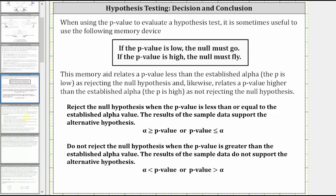When using the p-value to evaluate a hypothesis test, it is sometimes useful to use the following memory device. If the p-value is low, the null must go. If the p-value is high, the null must fly. This memory aid relates a p-value less than the established alpha as rejecting the null hypothesis, and a p-value higher than the established alpha as not rejecting the null hypothesis.